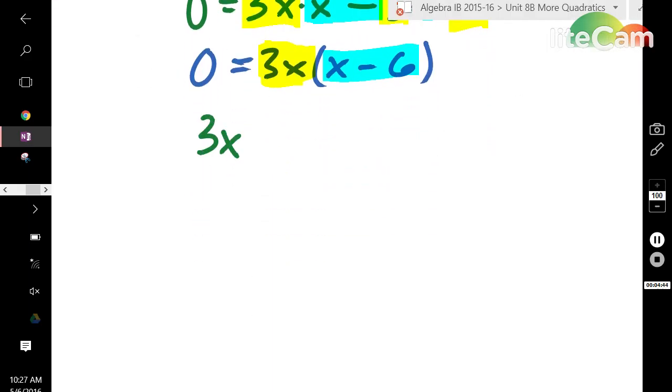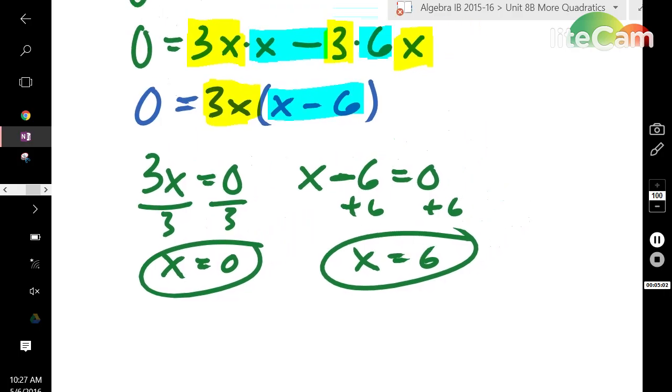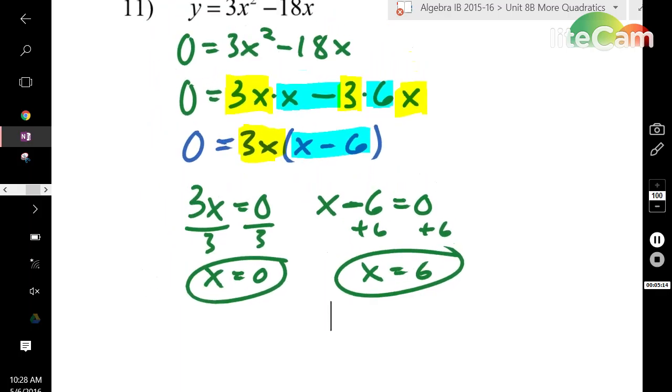So, it's 3x equals 0. x minus 6 equals 0. Divide both sides by 3. x equals 0. Add 6. x equals 6. So, we're able to set both these equal to 0 because of the 0 product property. As stated before, one or both has to be equal to 0. So, we assume that both are. We plan for that accordingly. We solve for x. And that's how you factor out a GCF.